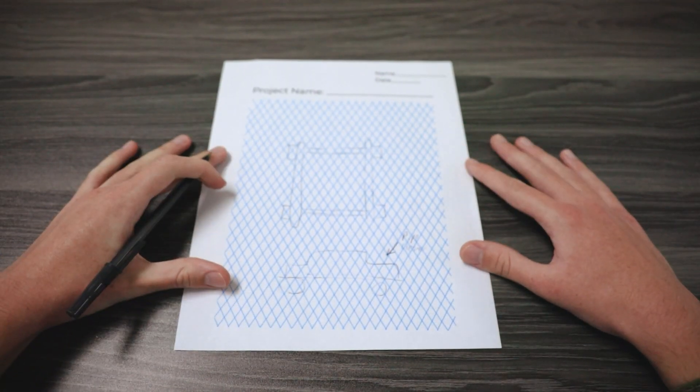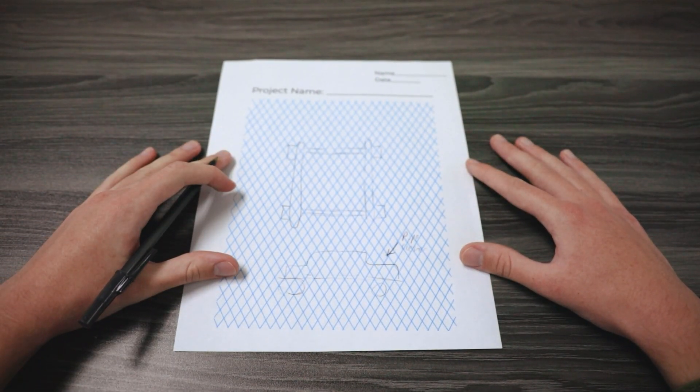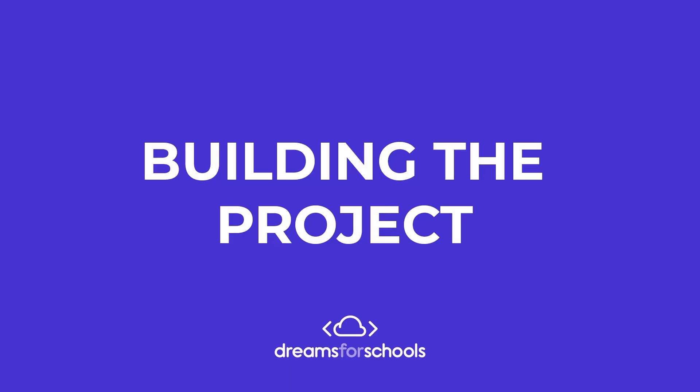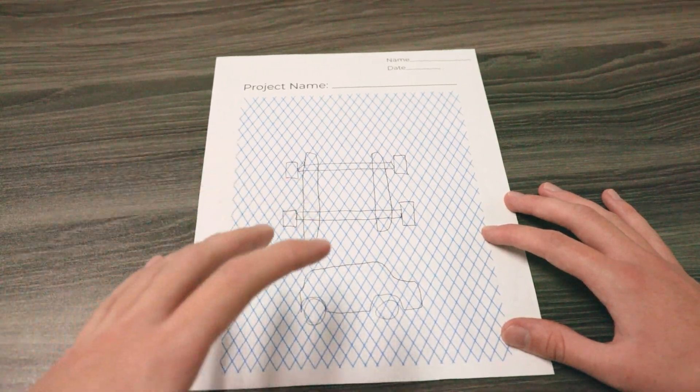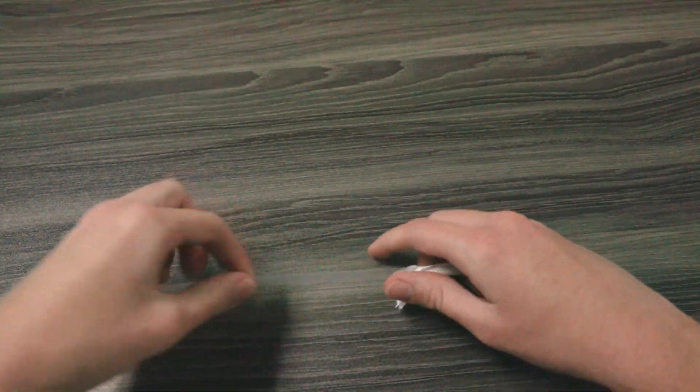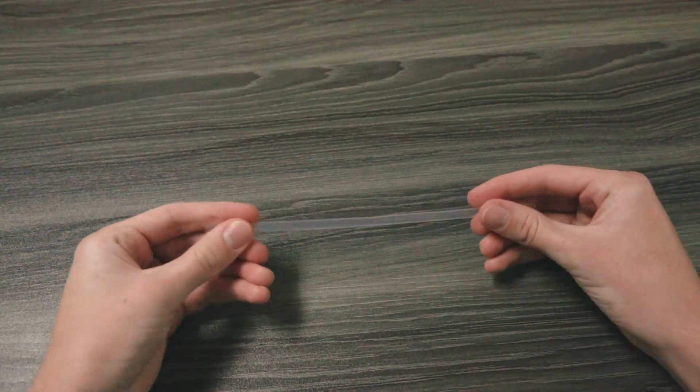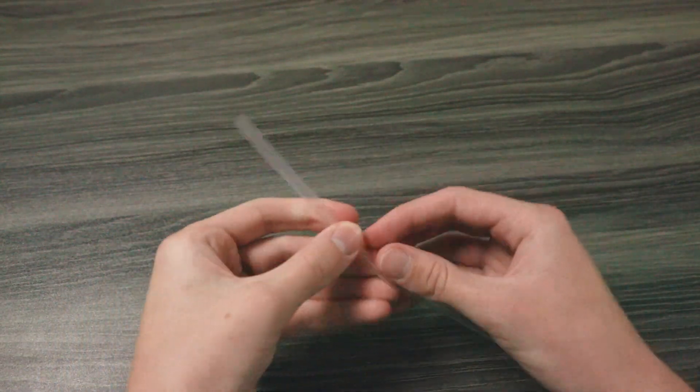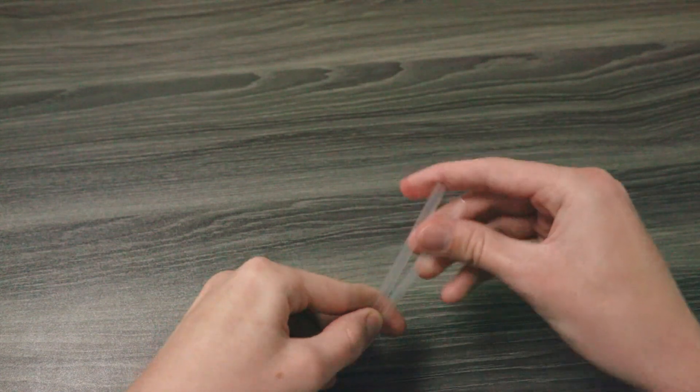Once we've done our blueprint we're ready to start building our design. Now that we're done designing we are ready to build. Let's start by taking our straw. If it's in a paper wrapping you can simply remove that. We're going to cut it about in half with our scissors. This cut doesn't have to be exact.